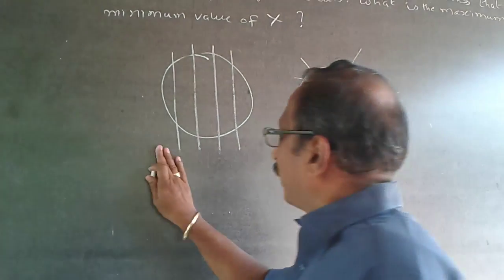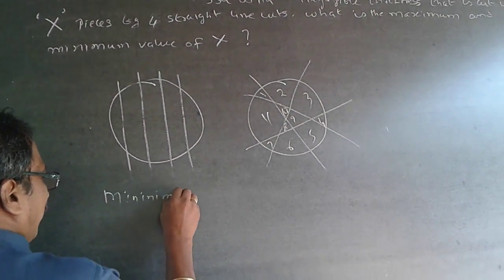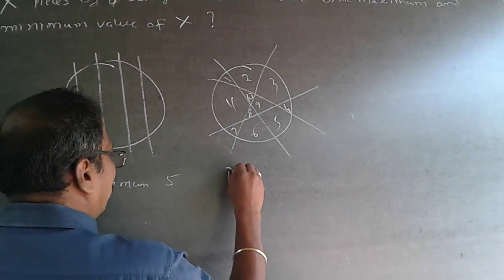So minimum number of pieces is 5. Minimum is 5 and maximum will be 11.